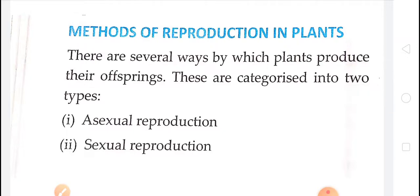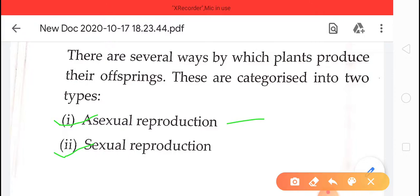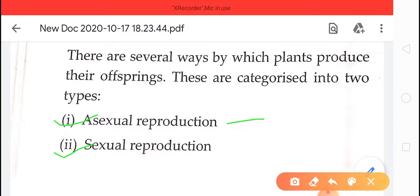Two types of reproduction take place in plants: number one, asexual reproduction, and number two, sexual reproduction. In asexual reproduction, a single parent is required. The offspring, or progeny, that are formed after asexual reproduction are clones — they are identical to each other.